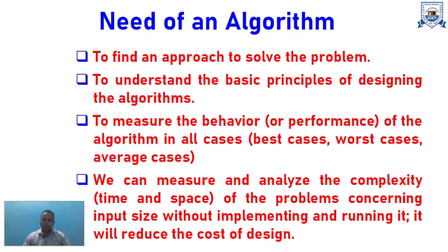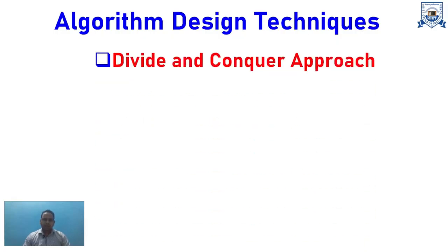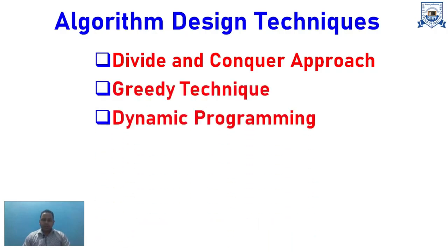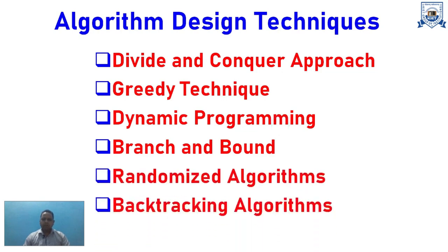We can measure and analyze an algorithm's time and space complexity for a given input without actually implementing and running it. This allows us to reduce the cost of design at an early stage. The six design techniques for algorithms are: Divide and Conquer, Greedy, Dynamic Programming, Branch and Bound, Randomized Algorithm, and Backtracking.